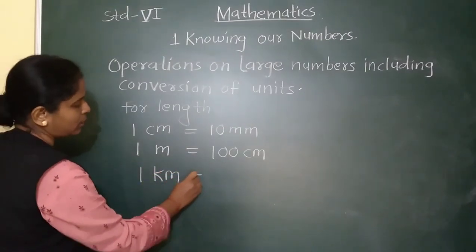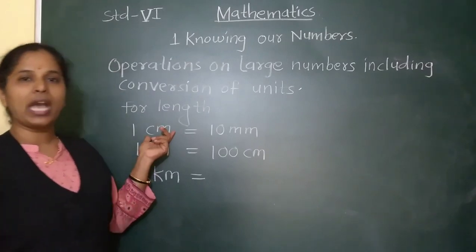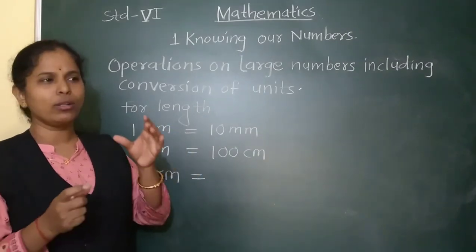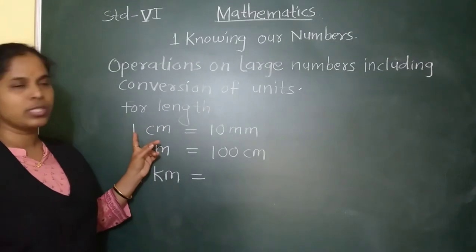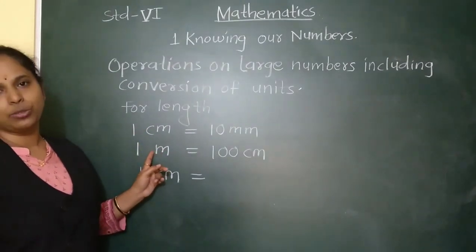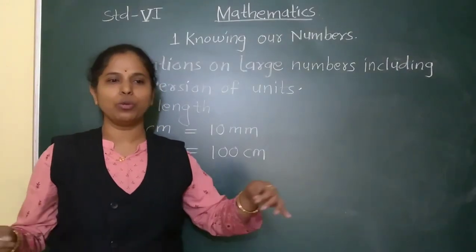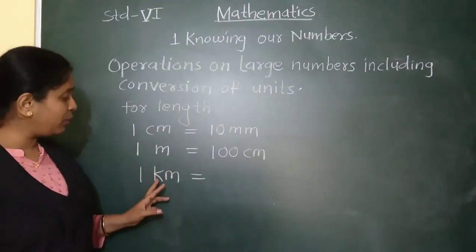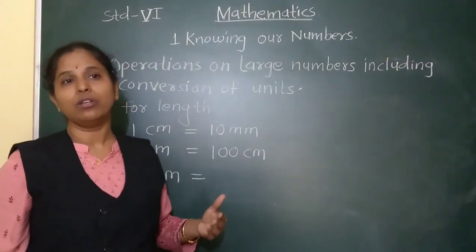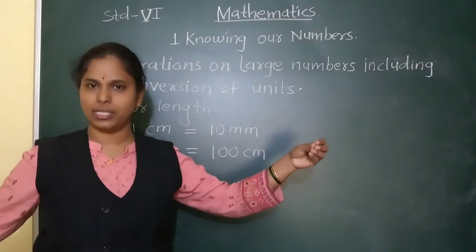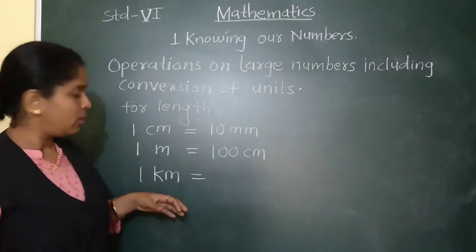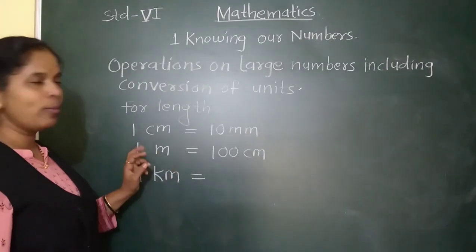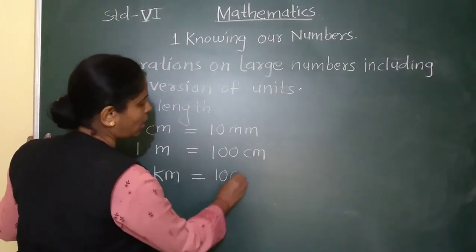One kilometre. Centimetre is used to measure the length of smaller things like a pen. Metre is used when we want to measure cloth or the length of a bed. And kilometre is used for long distances, for example the length of a road. One kilometre is equal to 1000 metres.